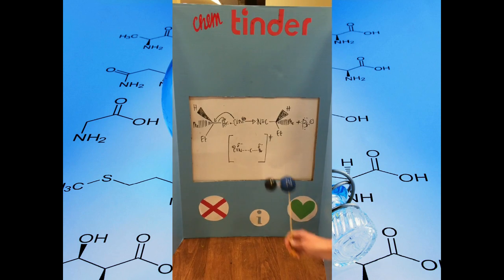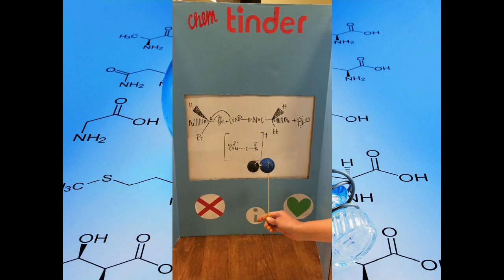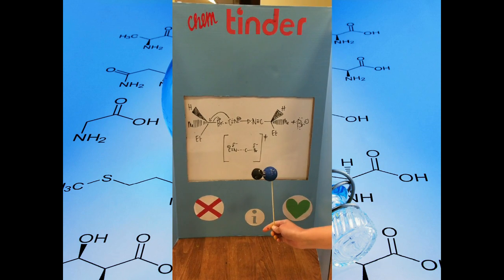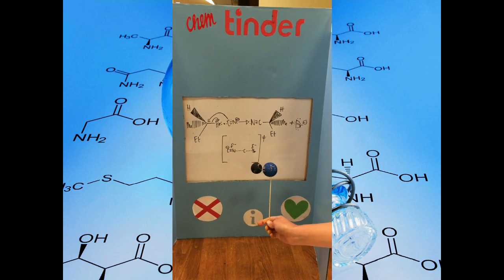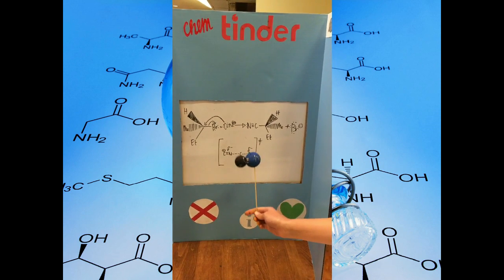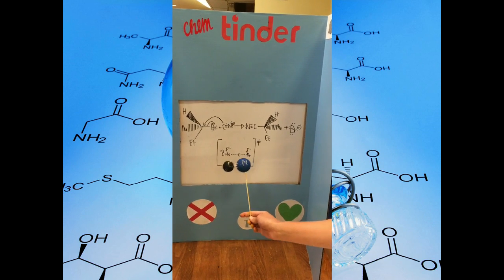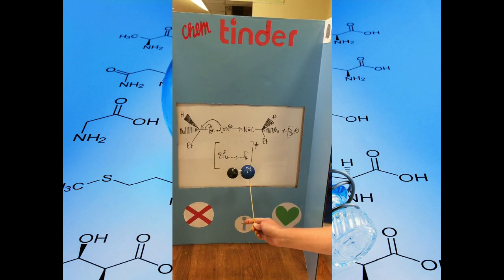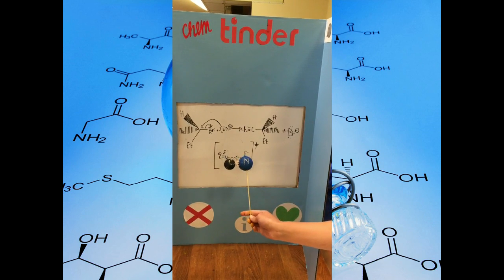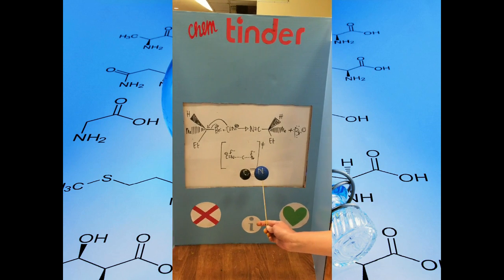In this SN2 reaction, the bromide leaving group leaves at the same moment the cyanide nucleophile attacks. As the cyanide nucleophile attacks the carbon stereocenter, replacing the bromide, the entire configuration of the molecule is switched.